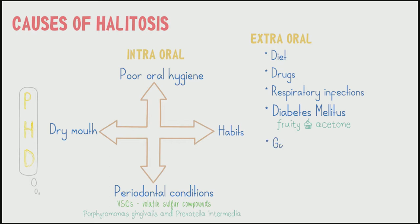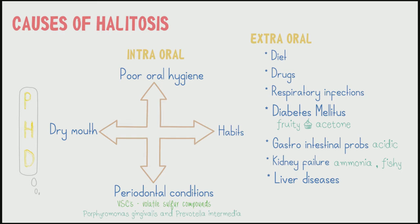Patients with acid reflux or gastrointestinal problems often complain of acidic breath. Patients with kidney failure may have breath that smells like ammonia or urine. Patients with serious liver diseases can have breath that smells musty, like garlic or rotten eggs. And lastly, the most serious of all — the presence of any malignancy.